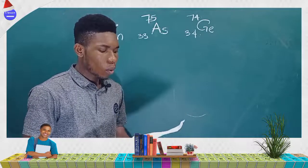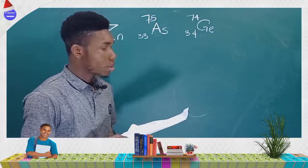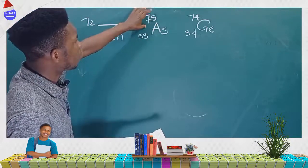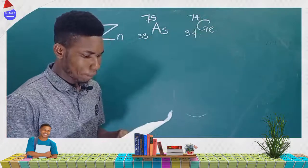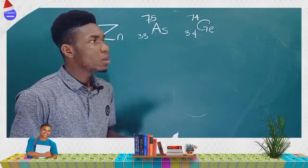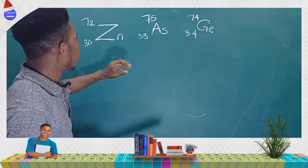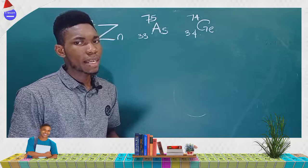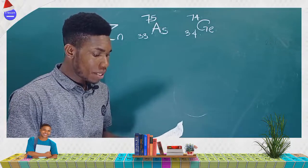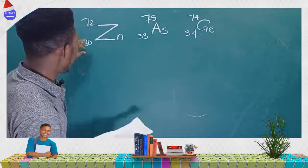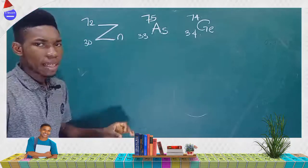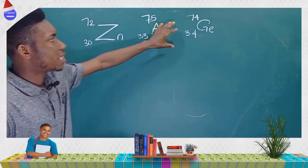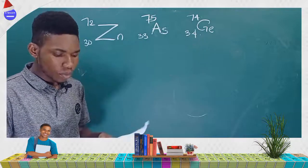Consider the species zinc-70 with atomic mass 72, arsenic with atomic mass 75, and germanium with atomic mass 74. Option A says they have the same number of electrons — that is not true because they have different numbers of protons, so they are not isoelectronic. Option B says same number of protons — no, their atomic numbers are 30, 33, and 34 respectively.